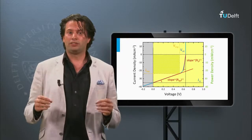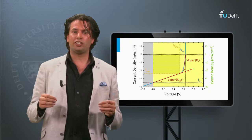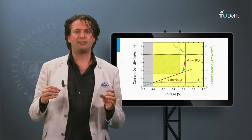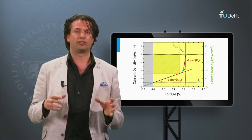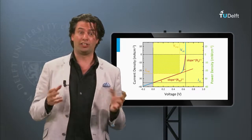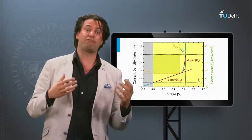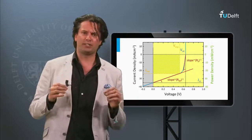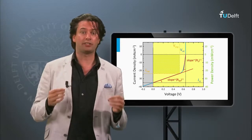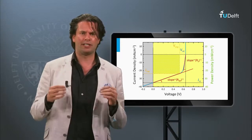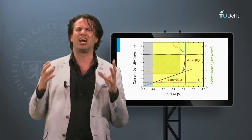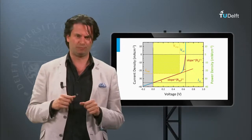In summary, real solar cells and panels have series and shunt resistance. In solar cell design and manufacturing it is important to minimize the series resistance and to make the shunt resistance as large as possible.